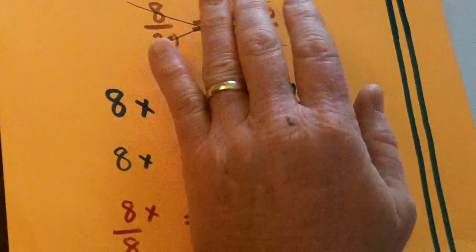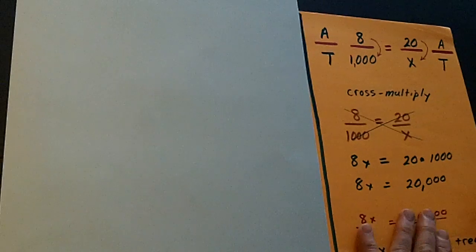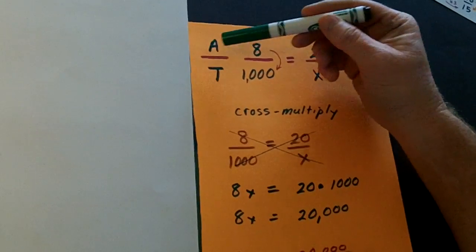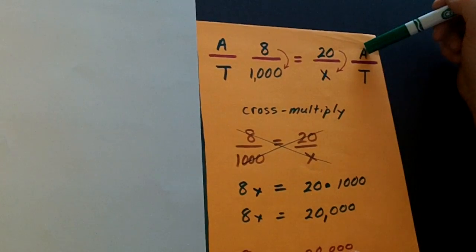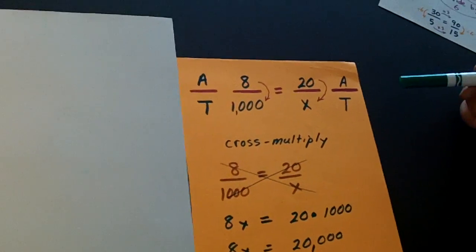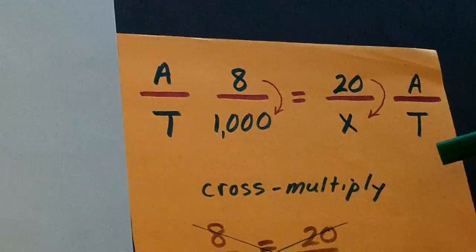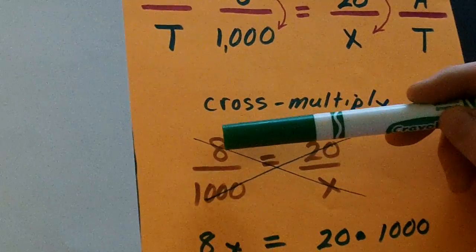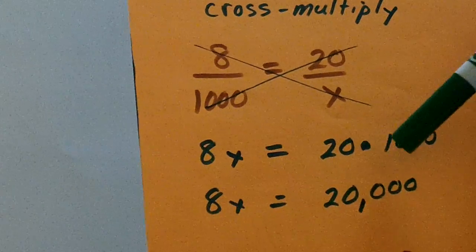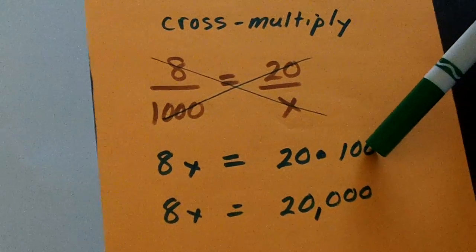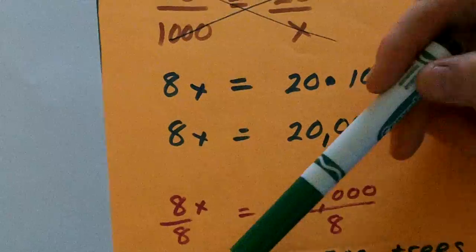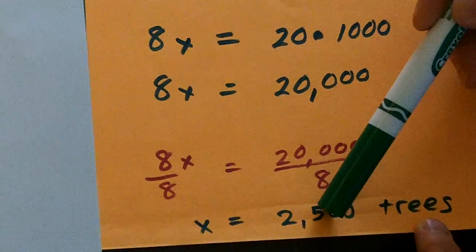Now, let's say that instead of having acres and acres up and down, we do acres 8 and acres 20 going across. So, the number of trees that those acres produce is always on the bottom. Will we get the same answer? So, we cross multiply. 8 over 1,000 equals 20 over x. We get 8x is equal to 20 times 1,000. And so, that's 8x equals 20,000. We divide by 8 on both sides and we get x equals 2,500 trees.